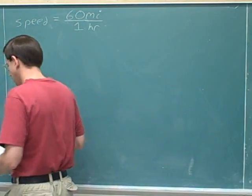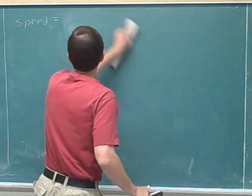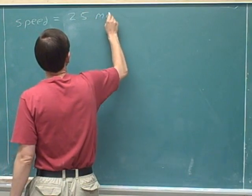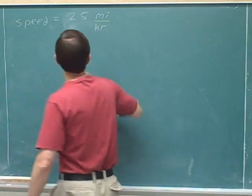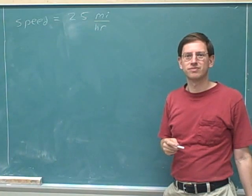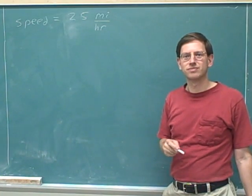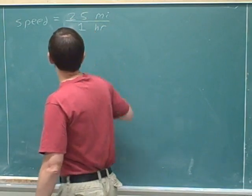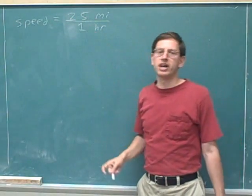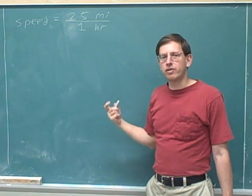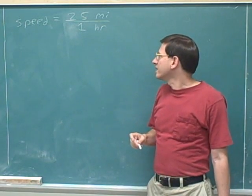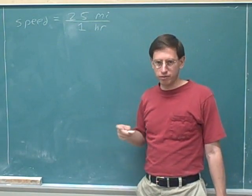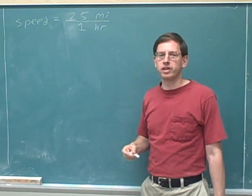Let's think about another situation. Let's say we have somebody who's driving at a speed of 25 miles per hour. How would we interpret that? Again, we combine the number with the unit into a single ratio and put the number one on the bottom. If someone's driving at 25 miles per hour, what that really means is that in one hour, they would cover 25 miles.